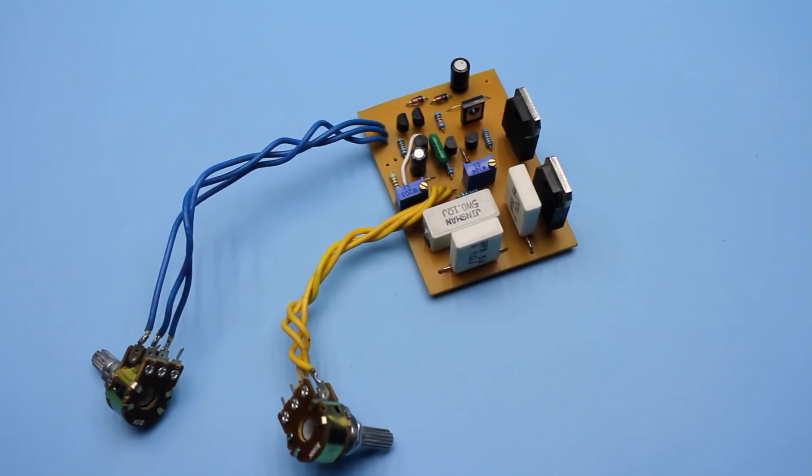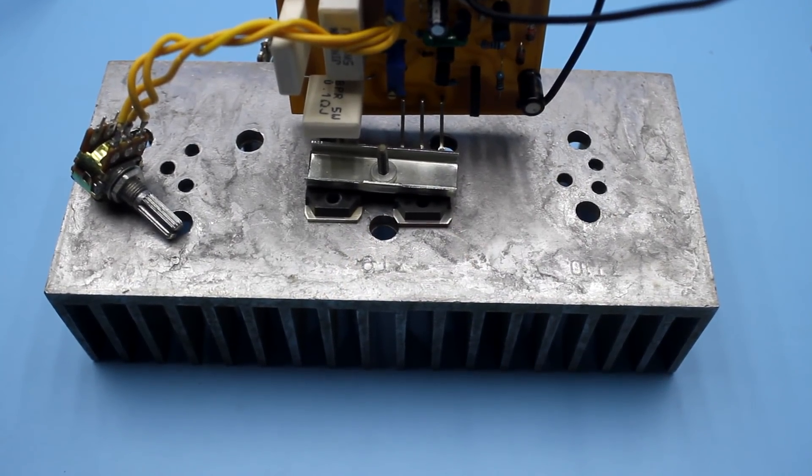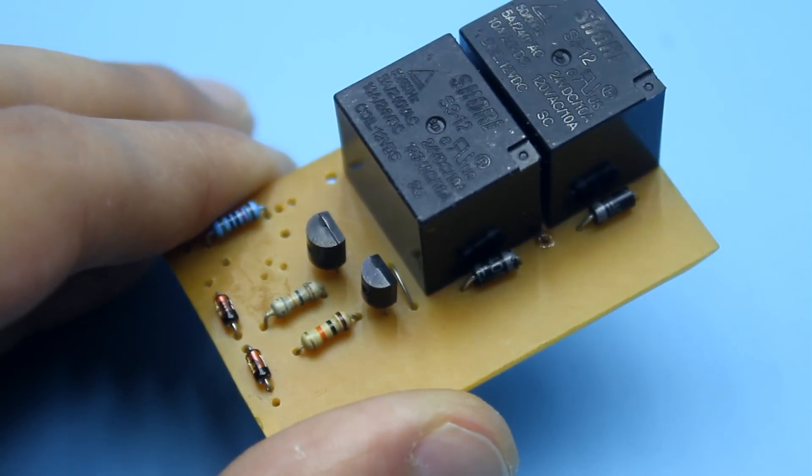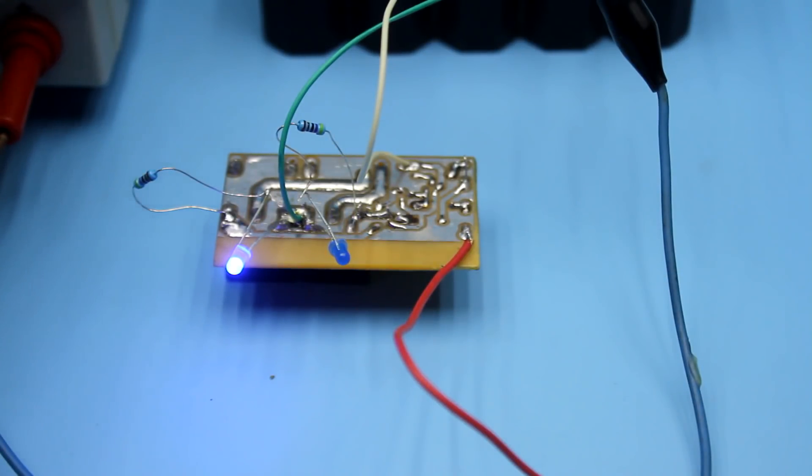There are two main options for solving the problem: a huge radiator with a fan for cooling the power transistor, or a system for switching the transformer windings. The second option is most preferable and it will allow you to get rid of massive radiators and a noisy fan.